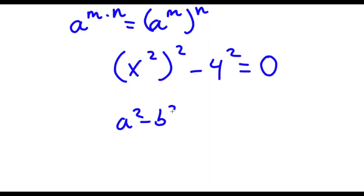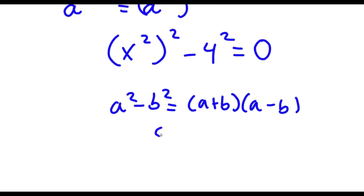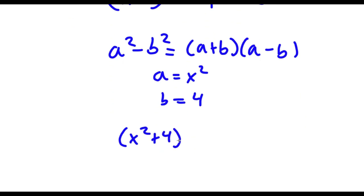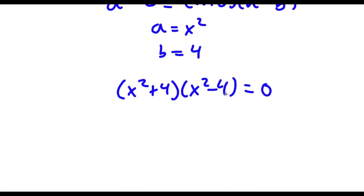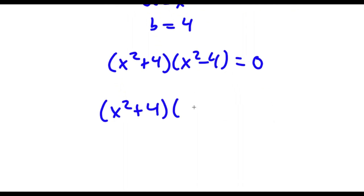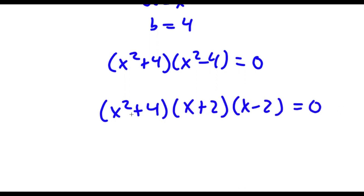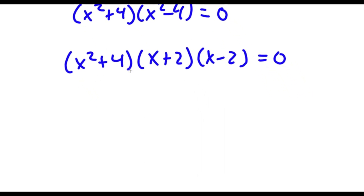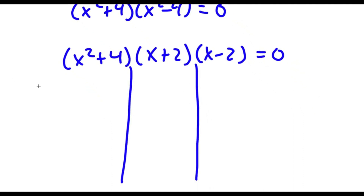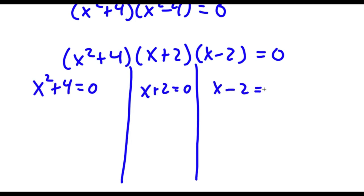Now if I have something in the form a squared minus b squared, this is equal to a plus b times a minus b. In this case a is equal to x squared and b is equal to 4. So I have x squared plus 4 times x squared minus 4 equals 0. And x squared minus 4 is the same thing as x plus 2 times x minus 2. So this gives me three equations.